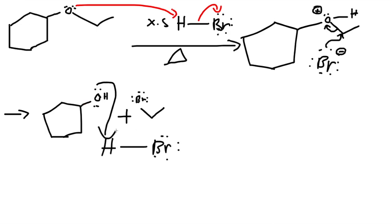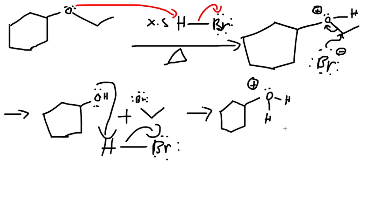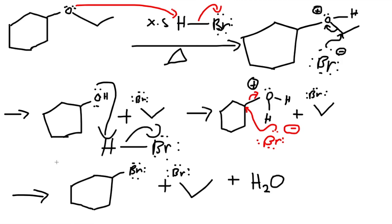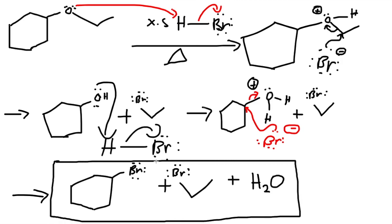HBr comes again. Oxygen grabs the hydrogen and kicks off the bromine. We have the structure with two hydrogens and a positive charge. The other bromine, negatively charged, comes in as a nucleophile, attacks that carbon, and kicks off the electrons to oxygen. Now we have three products: our main product with HBr plus the other bromine attached, with a byproduct of water. This is our final product. Again, this reaction cannot happen for an SP2 carbon.